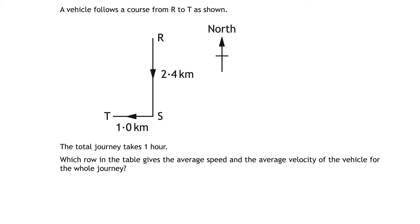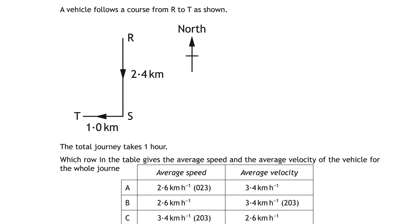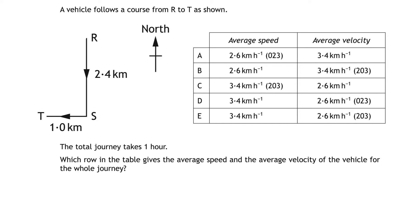A vehicle follows a course from R to T as shown. The total journey takes one hour. Which row in the table gives the average speed and the average velocity of the vehicle for the whole journey? Let's get that table in and up beside the diagram. Straight off the bat we can get rid of two answers A and C. The reason being that speed shouldn't have a direction since it's a scalar, but velocity should because it's a vector.